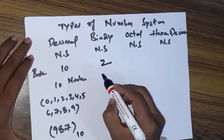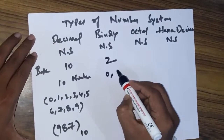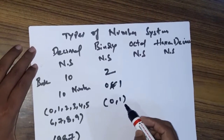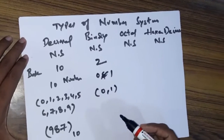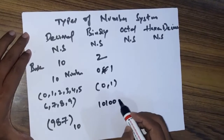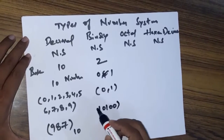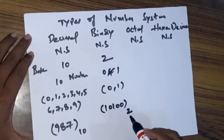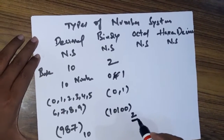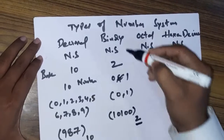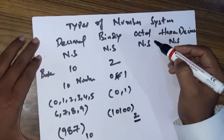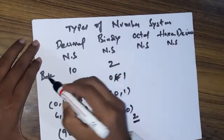In the binary number system, the base is 2, meaning we have only two numbers: 0 and 1. To represent any number, we repeat these two digits only — for example, 1 0 1 0 0. We close the number with the base subscript 2. Whenever you see a number with base 2, identify it as a binary number.